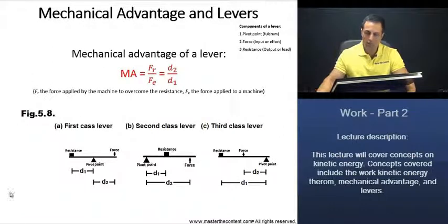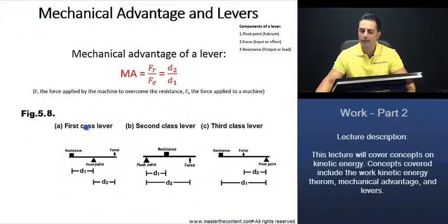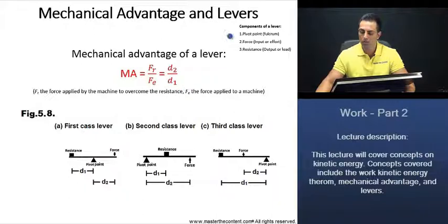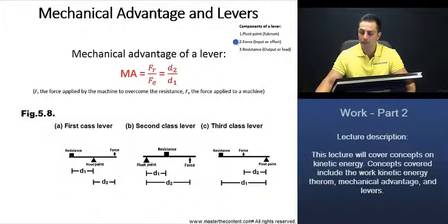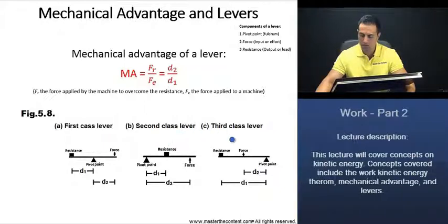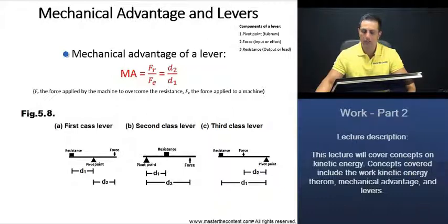Now let's take a look at mechanical advantage and levers. Just forget what it says on the slide for a moment, and let's make ourselves comfortable with the components of a lever. A lever is going to have three components: it's going to have its pivot point, it's going to have the force, and it's also going to have the resistance — and that's what we see for all three levers.